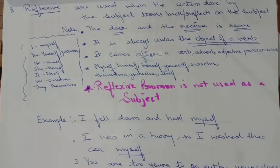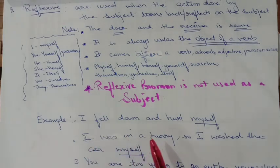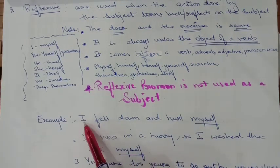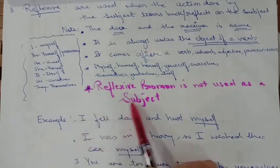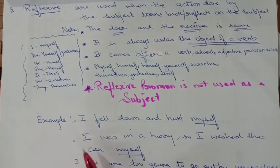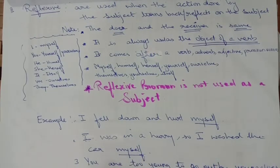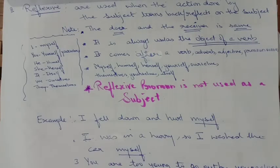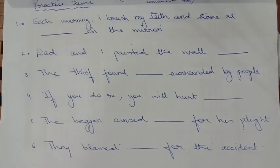Kindly stop saying that. Introduce yourself as 'I am so-and-so, whatever your name is.' See the examples: 'I fell down and hurt myself' — 'I' is the subject and 'myself' is the reflexive pronoun. 'I washed the car myself.' 'You are too young to go out by yourself.' Now go through all these sentences, try to do them, and leave your answers in the comment box.